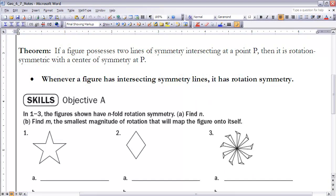Next, I'd like to look at the relationship between reflection symmetric figures and rotation symmetric figures. Here's a theorem: if a figure possesses two lines of symmetry—in other words, if it has reflection symmetry and there are two lines of reflection symmetry—their point where they intersect, that point P, would be the center for rotation symmetry.